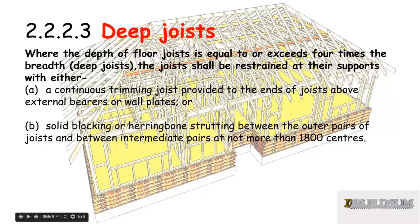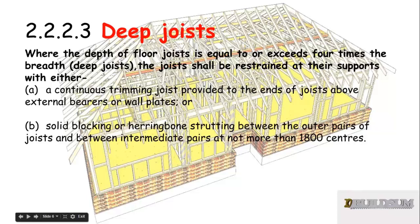For deep joists, where the depth of the floor joist equals or exceeds four times the breadth of the joist, the joists shall be restrained at their supports. This can be achieved with either a continuous trimming joist provided to the ends of the joists above external bearers, or solid blocking or herringbone strutting between the outer pairs of joists and the inner intermediate pairs at not more than 800mm centres. See the videos on deep joists linked in the description for further detail.